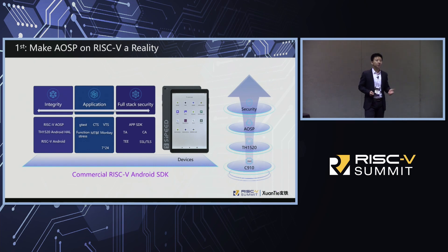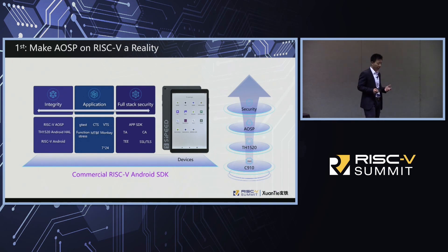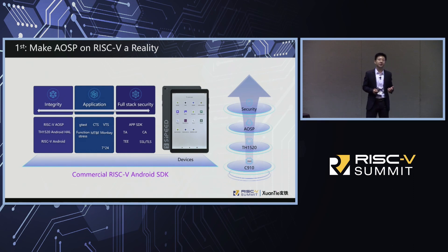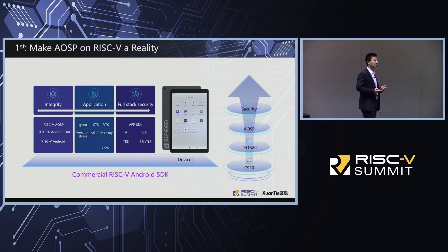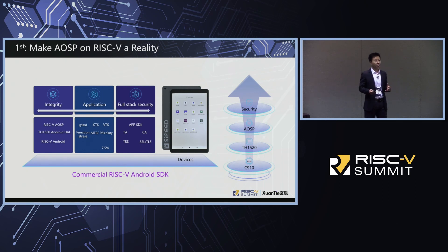Since 2021, engineers at Alibaba undertook massive efforts to directly support AOSP. By further expanding the core functionality of AOSP, we completed the system construction of AOSP on RISC-V, the HAL driver, and related development kits. We also passed compatibility testing and reliability testing. Regarding the security requirements for future mobile terminals, we also provide a full-stack security solution to ensure product security in all aspects, from hardware and software.